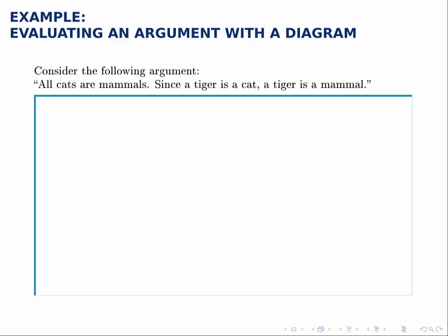Let's draw a diagram to evaluate this argument that all cats are mammals, a tiger is a cat, therefore a tiger is a mammal.